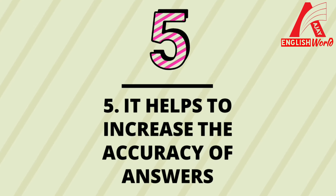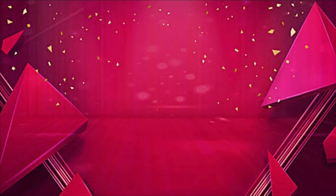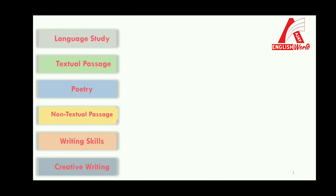Part one — State Board of Maharashtra new format of activity sheet for English higher level. The question paper will be divided into six sections, and these sections will be on: language study, textual passage, poetry, non-textual passage, writing skill, and creative writing.